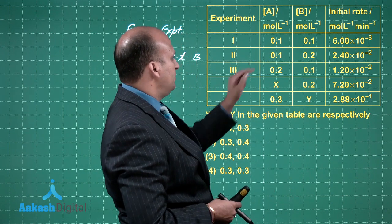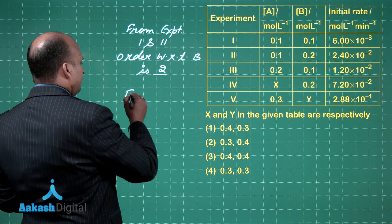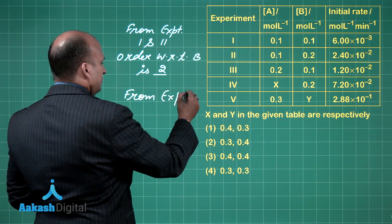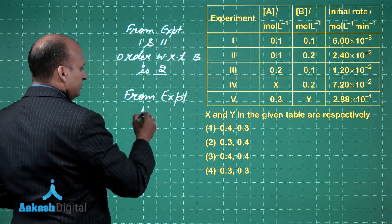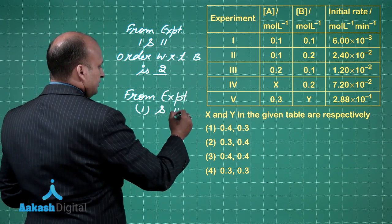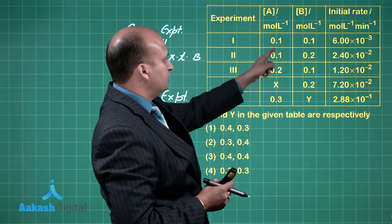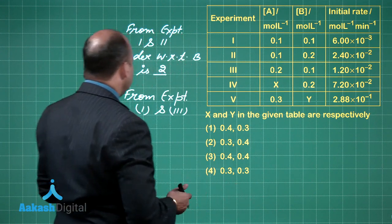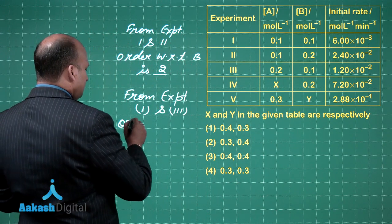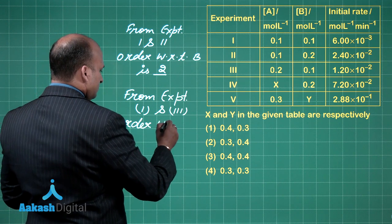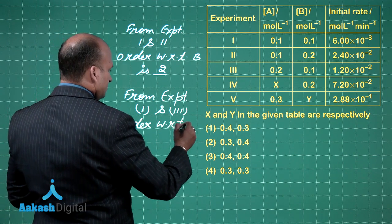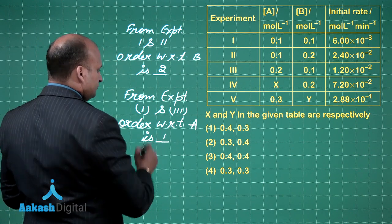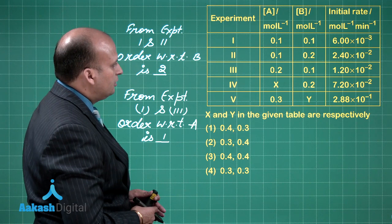Now let's look at experiments 1 and 3. From experiments 1 and 3, I double the concentration of A and the rate is getting doubled, which means that order with respect to A is 1. So the order we have got.